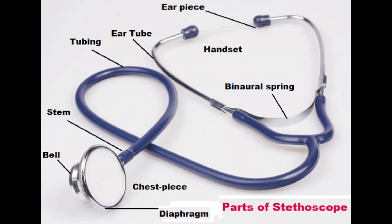A stethoscope is also used with a manual sphygmomanometer to measure blood pressure. Let us find out what the different parts of the stethoscope are and their functions.